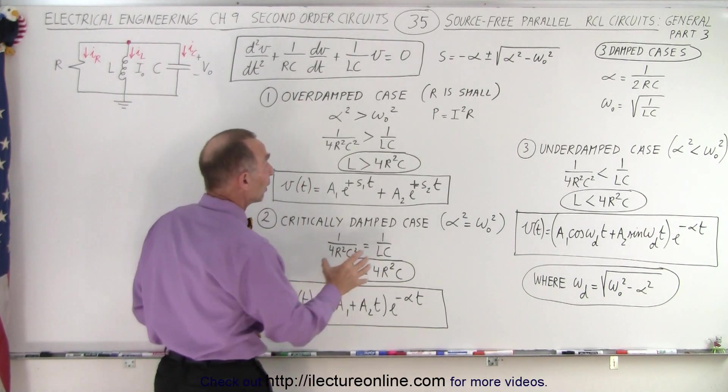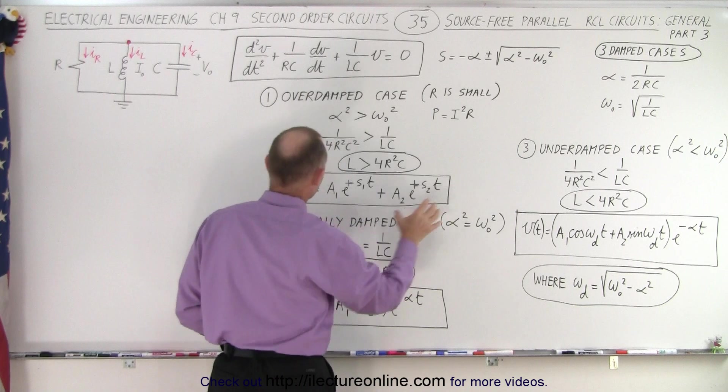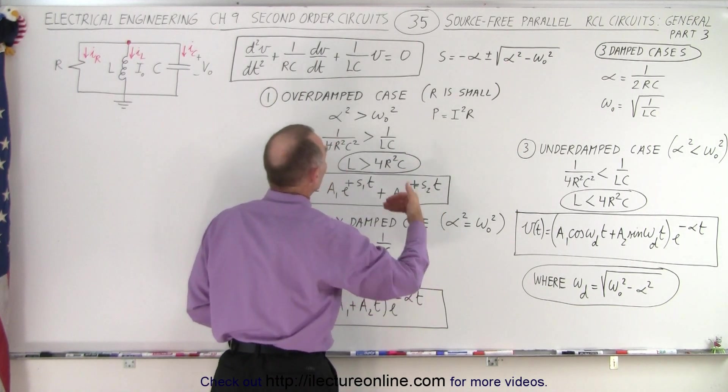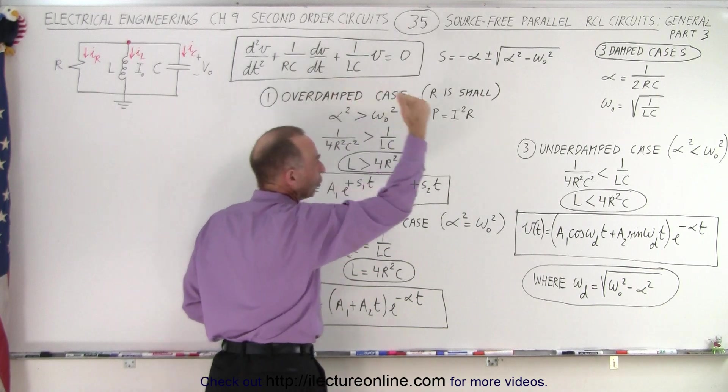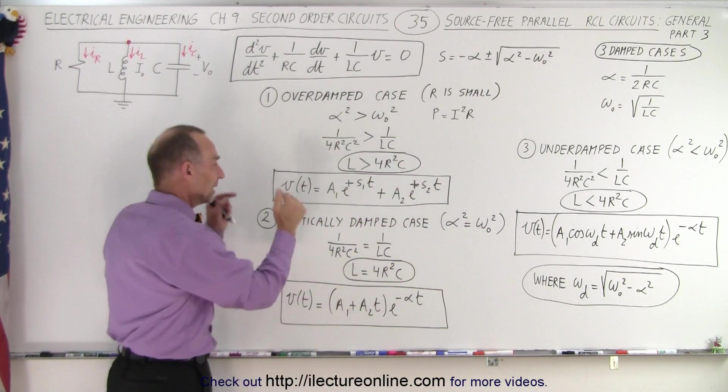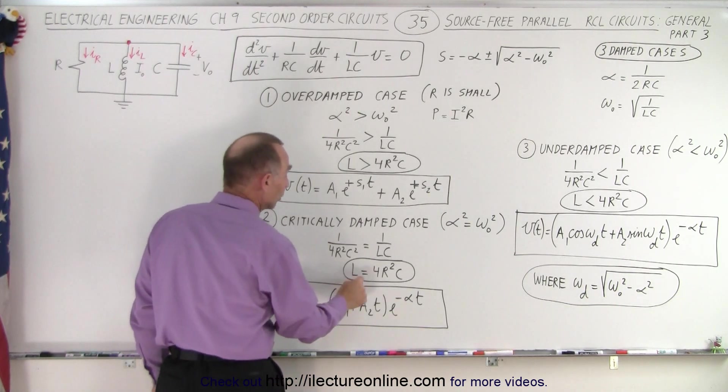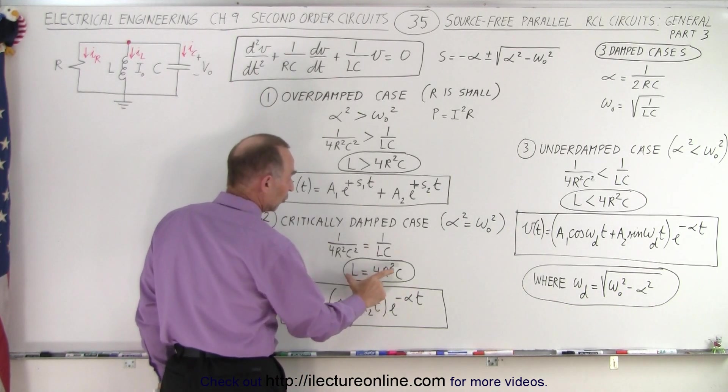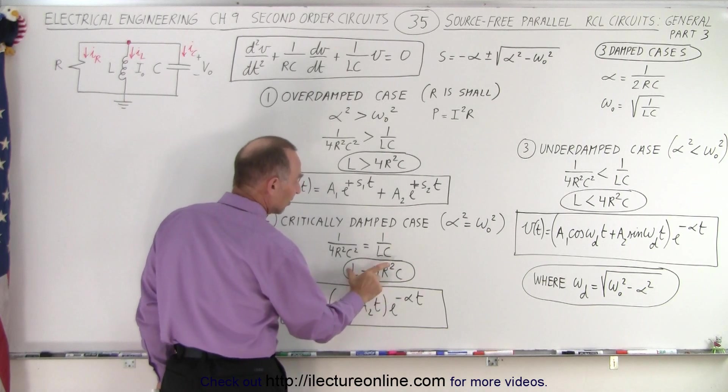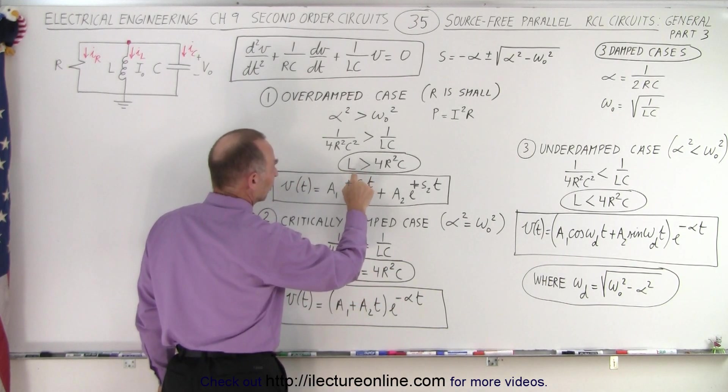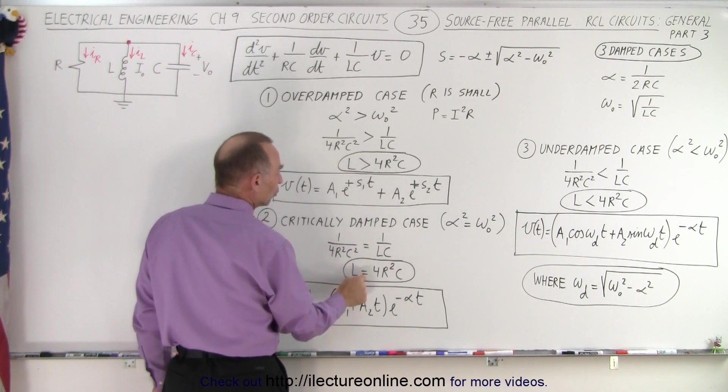Typically what that meant was we had a larger resistor in this circuit compared to this circuit. So the larger you make the resistor, the more you go from an overdamped case to an underdamped case. And so when you hit that exact spot, for a certain value of the resistance, you end up with L being equal to 4R squared C. Notice if you don't change L and C,